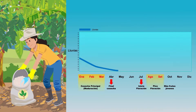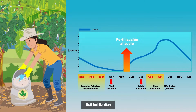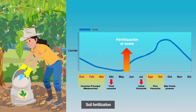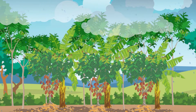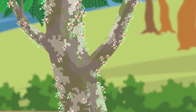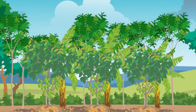After the maintenance pruning and with the onset of rains, it is ideal to fertilize the soil so that the cacao tree can be prepared for a new production and be vigorous. With the rain, a stage of abundant flowering begins and two months later will have the greatest presence of young fruits, which are susceptible to frosty pod rot.